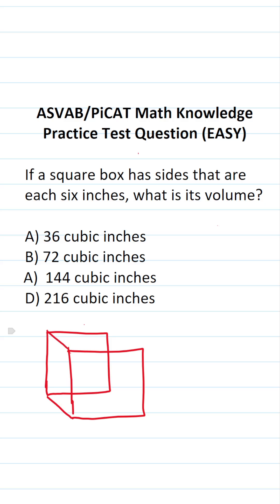In this case, we're talking about finding the volume of a square box. Well, a square box is also called a cube. We know its sides are each six inches. So that's six. Its length is six and its height is six.